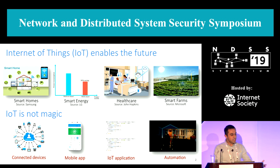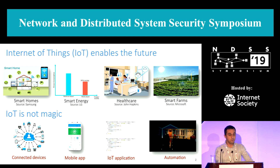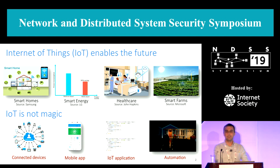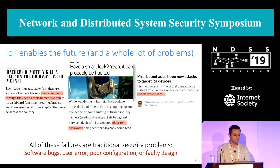Mobile applications are used to configure these devices and install IoT applications, which are simply programs used to create custom automations. For instance, at the bottom right you see a simple IoT application that turns on the lights and unlocks the door when users arrive home.